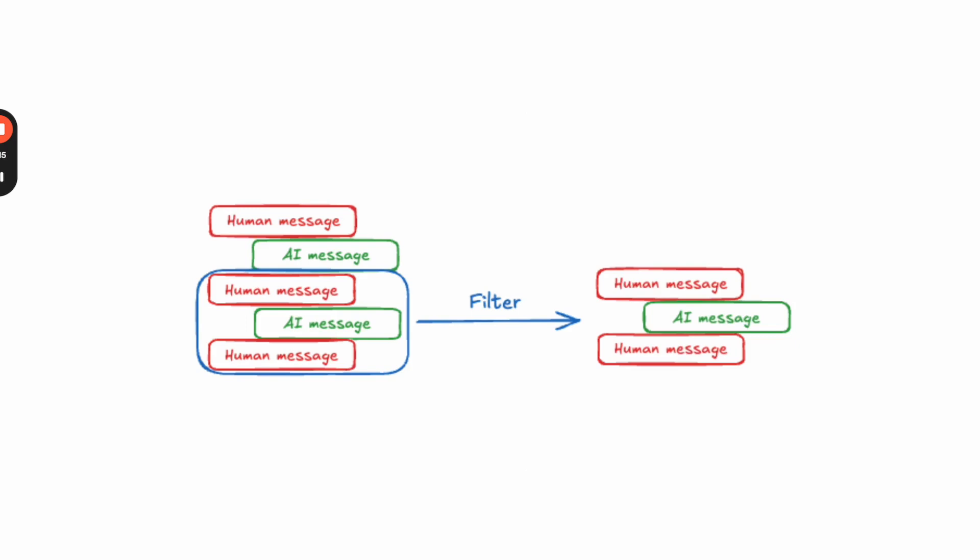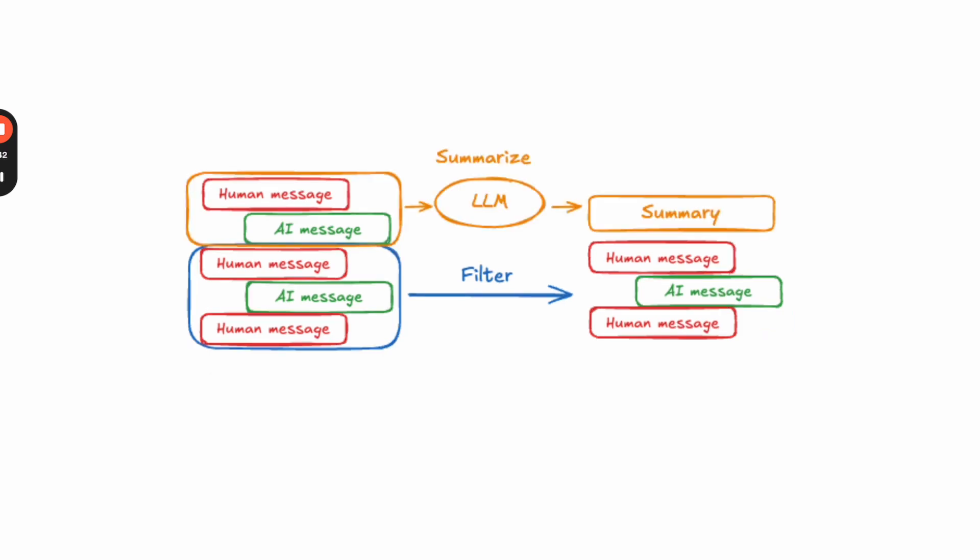One of the common techniques we see for short-term memory is just filtering messages. As you have more and more back-and-forth with an AI, the message list will grow in length, so being able to filter them is really important. There's some basic filtering, like just keeping the last 10 messages, but there's also filtering based on token counts and on the types of messages — for example, it may be more important to keep the human and AI messages rather than the tool messages. If you're not satisfied with just filtering messages, you can also summarize previous messages and pass in a summary, which is typically done by calling an LLM and storing that as some attribute on your graph state.